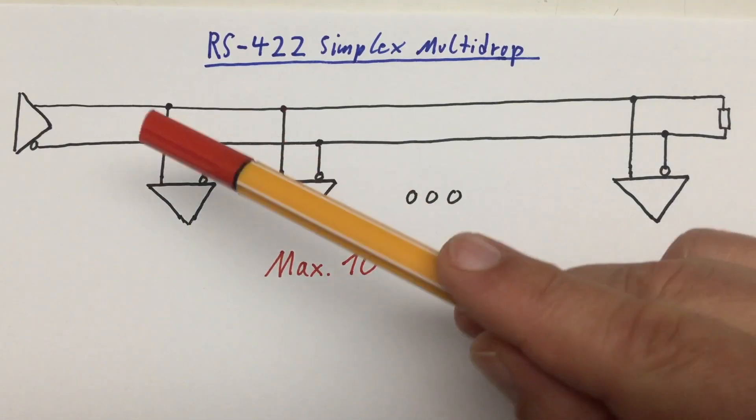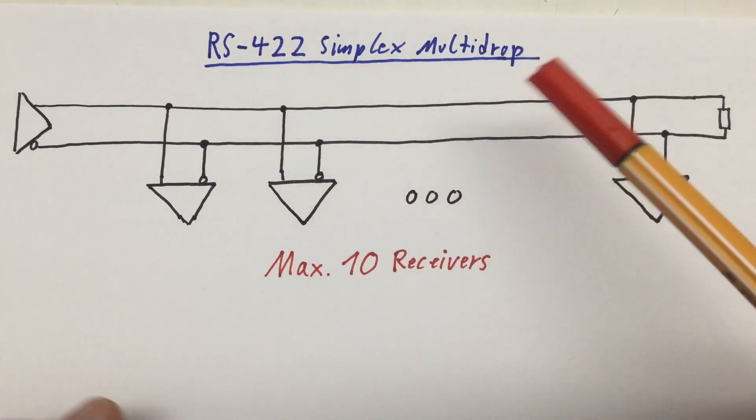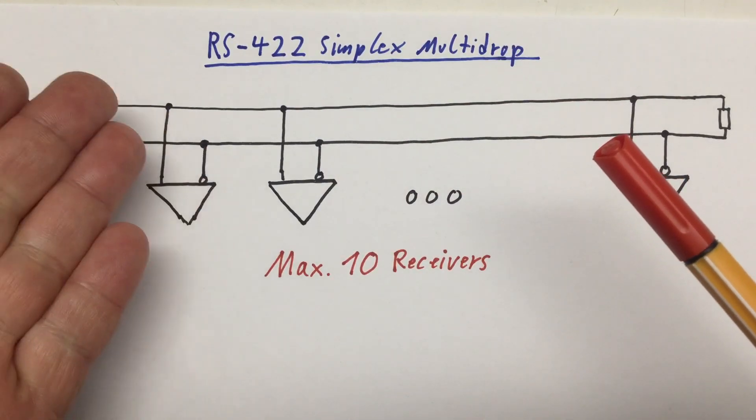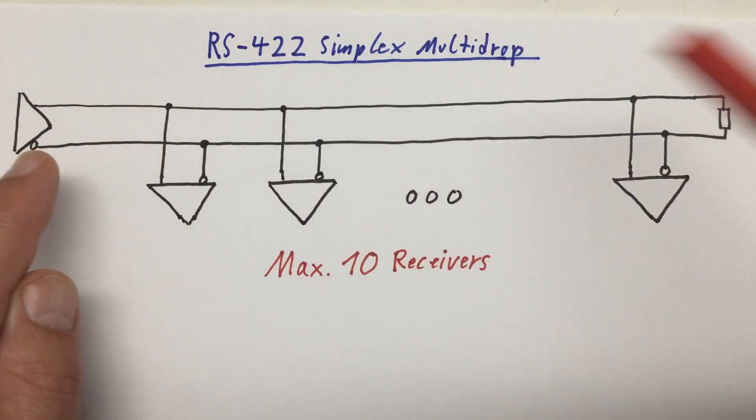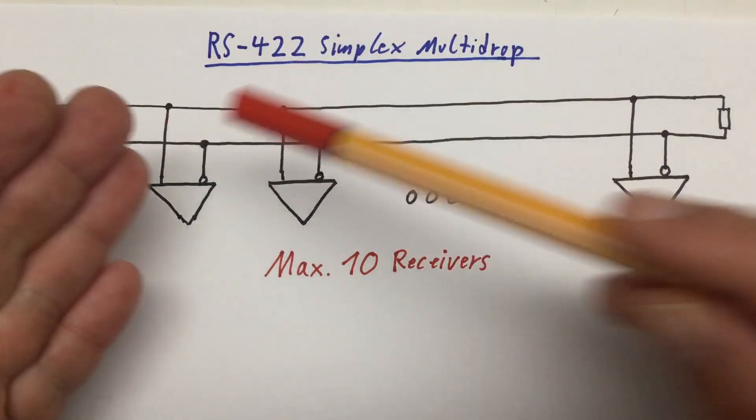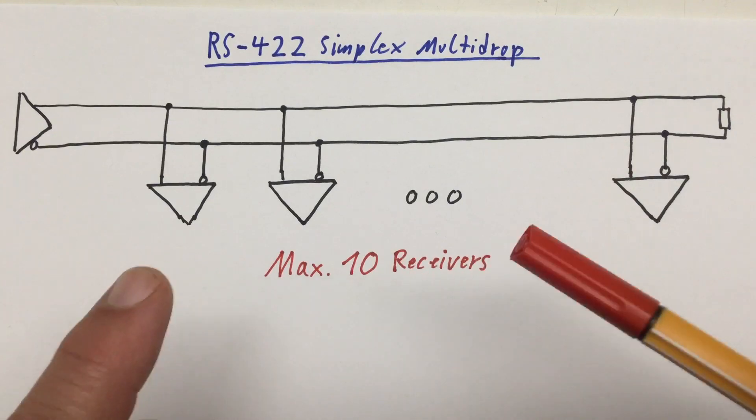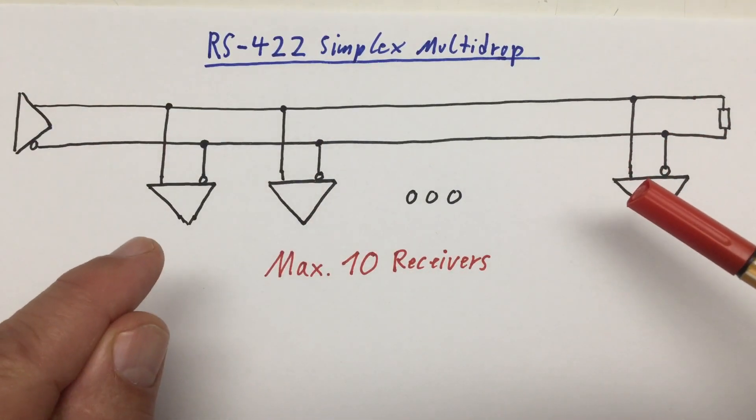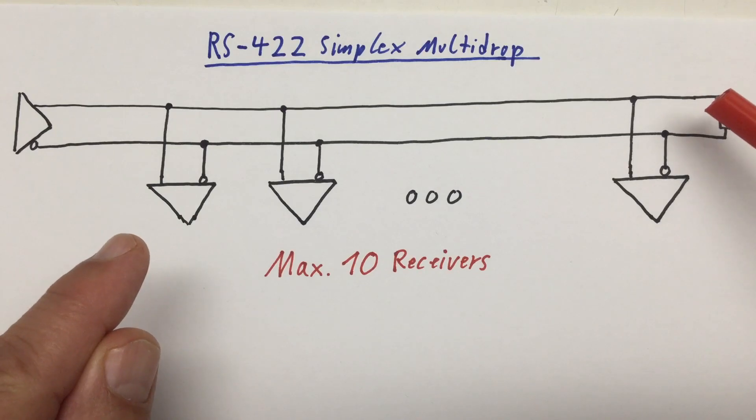So, first up, RS422 Simplex Multi-Drop. Multi-Drop meaning that one transmitter, line driver, can drive the line for, or transmit to, a maximum of 10 receivers connected to that RS422 line. The line is, of course, terminated.